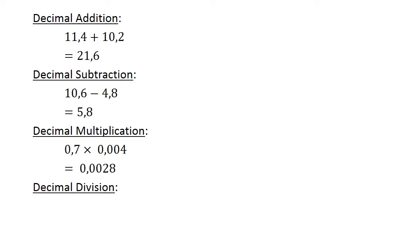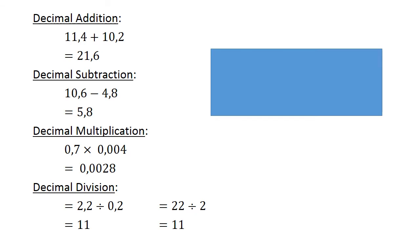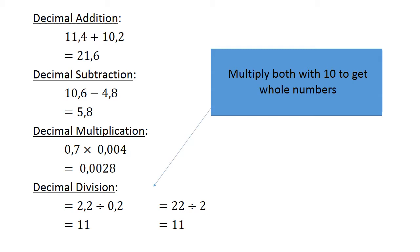Decimal division. 2.2 divided by 0.2. We multiply both by 10 to get whole numbers. 22 divided by 2 equals 11.